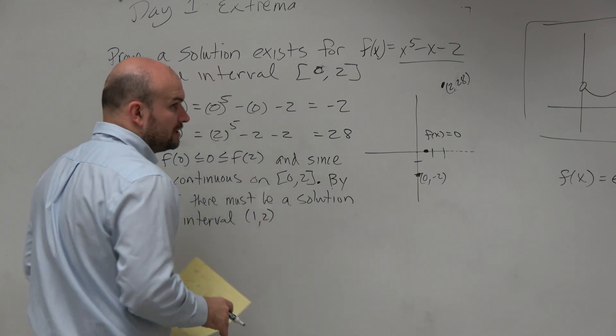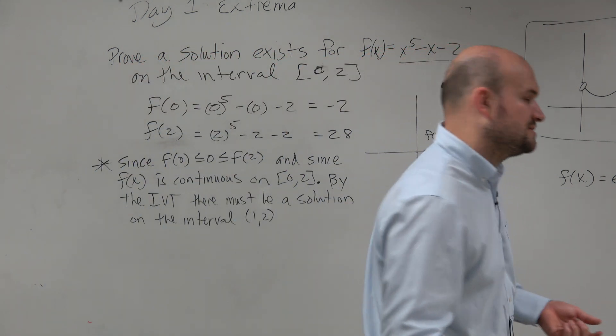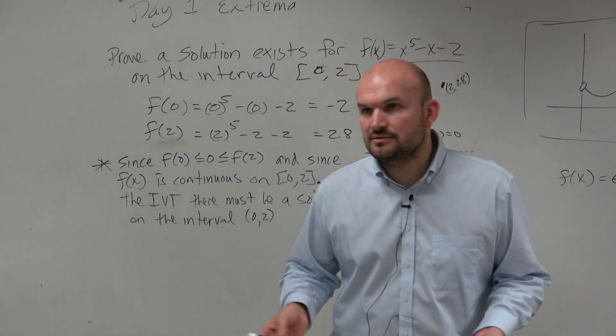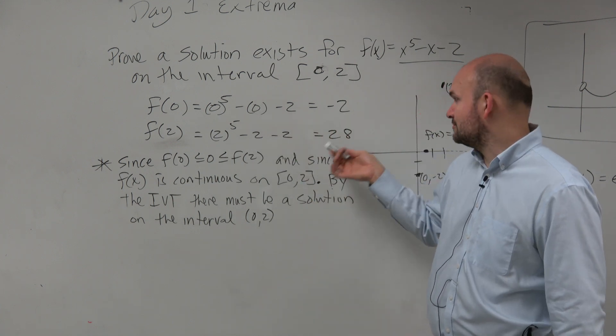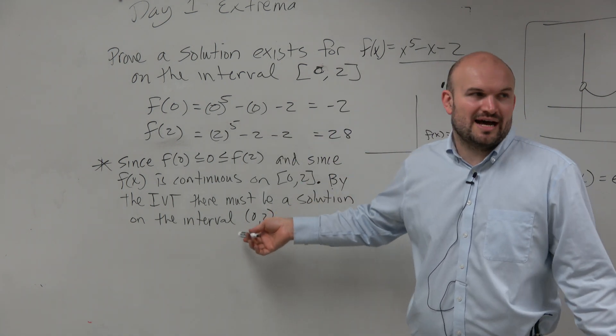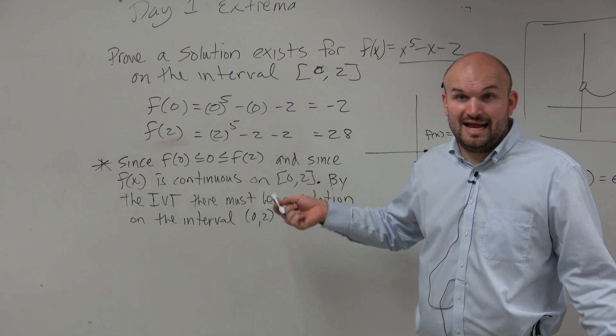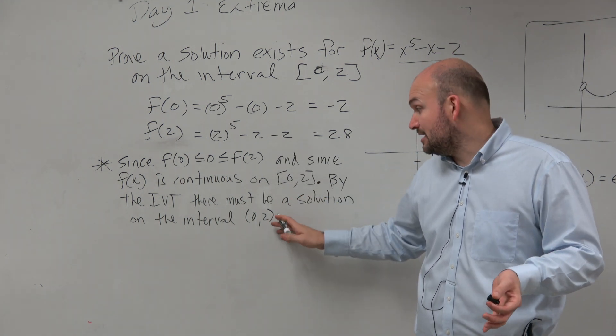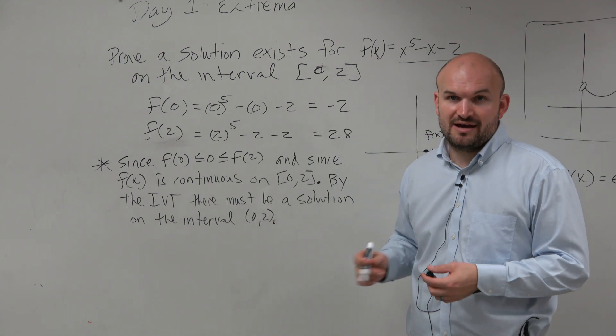Now, I'm not going to enclose that because we already know the solution doesn't occur at 0 and 2. 0 is at negative 2. 2 is at 28. So we know those are not the solutions. But at any point after that, or outside of those two values, a solution has to occur because of the IVT.